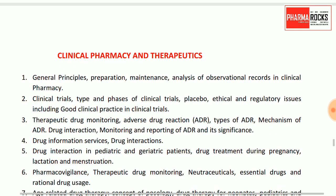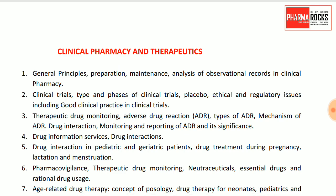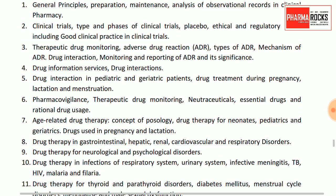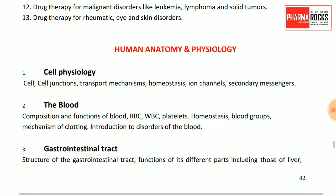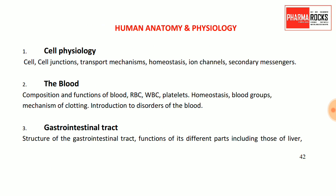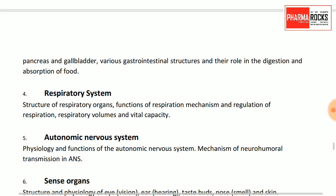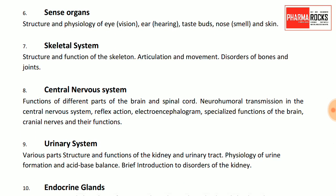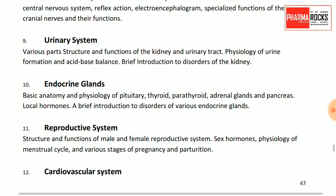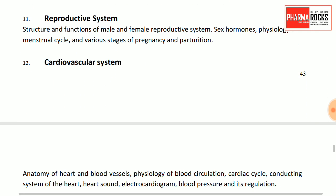The next subject is clinical pharmacy and therapeutics — case studies are important. The new subject of human anatomy and physiology covers cell physiology, blood, gastrointestinal tract, respiratory system, autonomic nervous system, sense organs, skeletal system, central nervous system, urinary system, endocrine, reproductive, cardiovascular, and lymphatic systems.